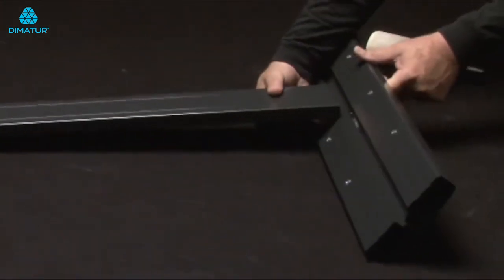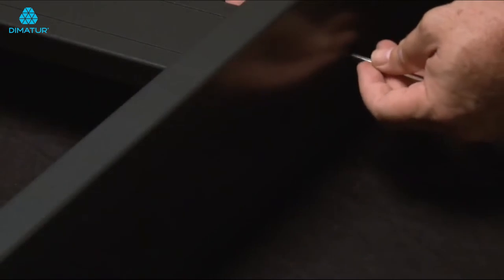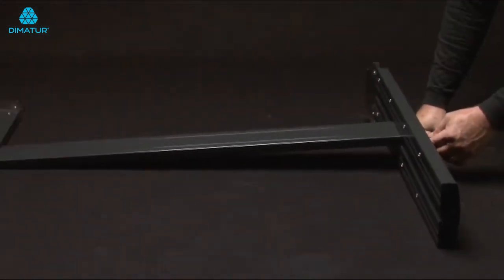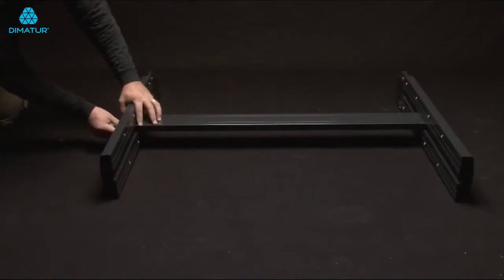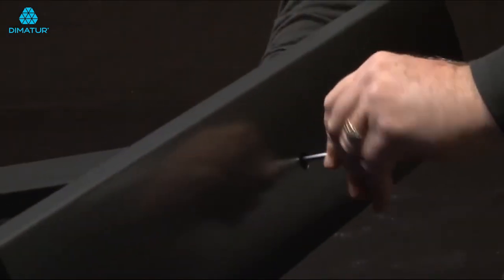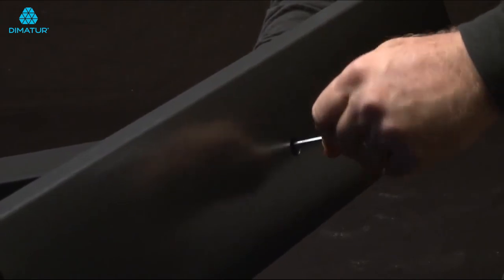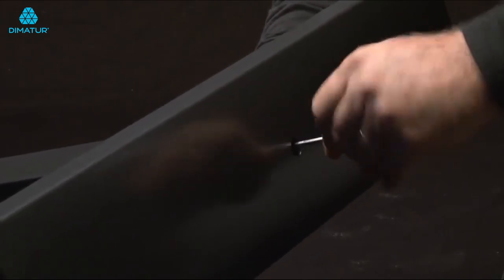First, mount both stand legs to the crossmember using four M5 socket head screws. As you mount the crossmember to each stand leg, do not tighten the screws completely. We will tighten them after we place the cutter on the stand and it has been properly seated.